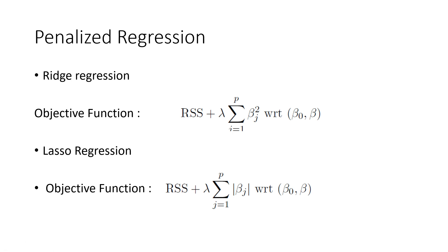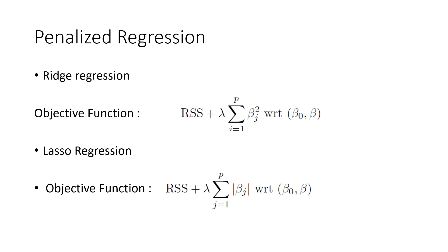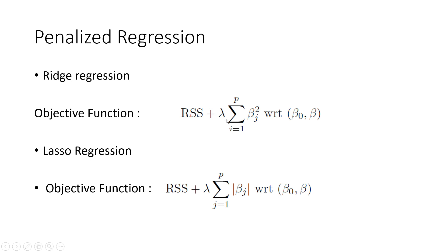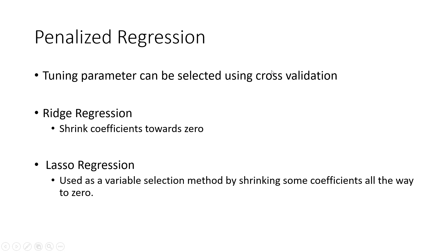Our goal is to minimize these objective functions so that we can estimate ridge regression coefficients and lasso regression coefficients. Here you can see this lambda, which we call the tuning parameter. Usually in a machine learning model, if we have this kind of tuning parameter we need to estimate it. In order to estimate this tuning parameter we can use cross-validation — either 5-fold cross-validation, 10-fold cross-validation, or sometimes leave-one-out cross-validation, depending on the situation, to identify this optimal tuning parameter.